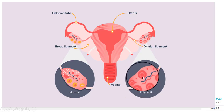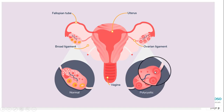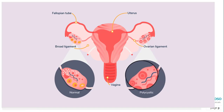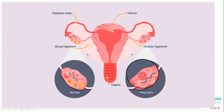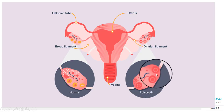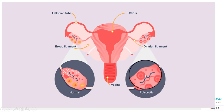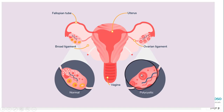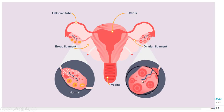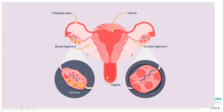The three main features of PCOS are: cysts in the ovaries, high levels of androgens or testosterone, and irregular or skipped menstrual periods. These cysts are actually follicles, each containing an immature egg that never matures enough to trigger ovulation. The lack of ovulation alters levels of estrogen, progesterone, FSH, and LH — estrogen and progesterone levels are lower than usual while androgen levels are higher, disrupting the menstrual cycle.